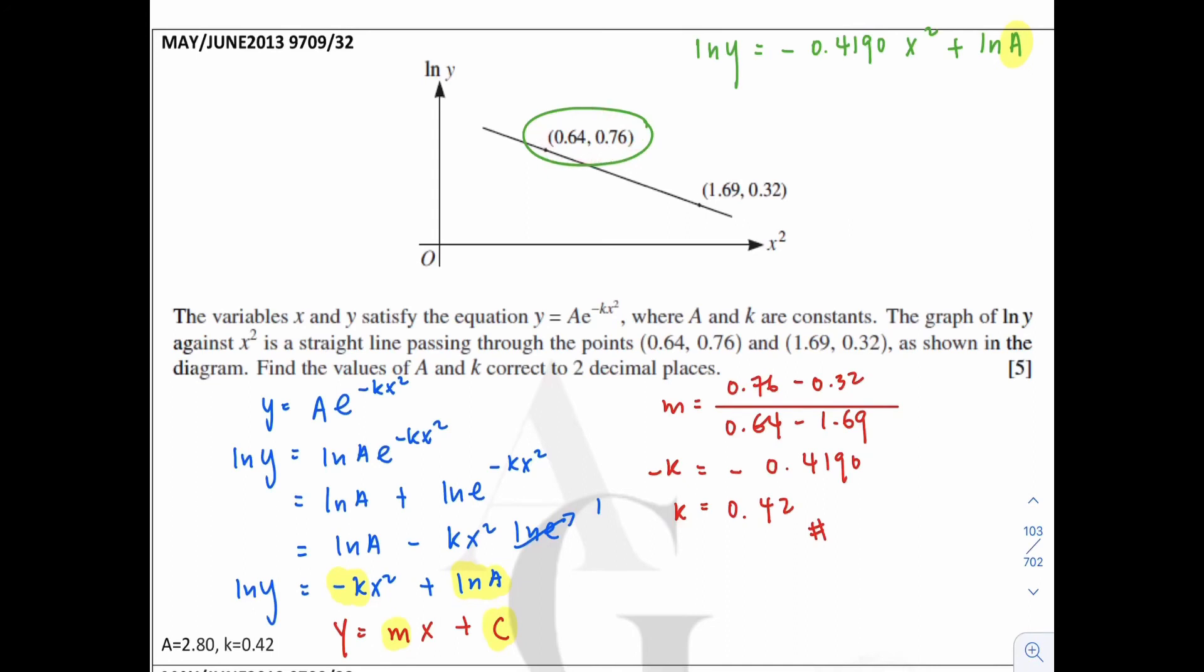And substitute 0.76 into the y here and ln it. But actually, these two coordinates represent x squared and ln y. So when we substitute into ln y, it should be 0.76 straight away. Equals to negative 0.4190 times 0.64 plus ln a. That's the correct way to do it. And from here, you can solve and get the a's answer as 2.80, correct to 2 decimal places.